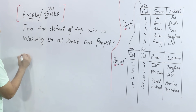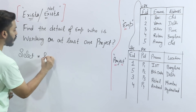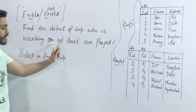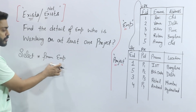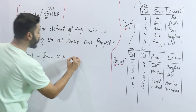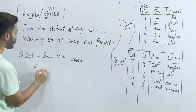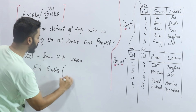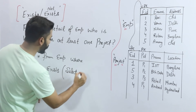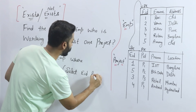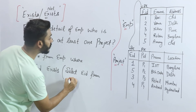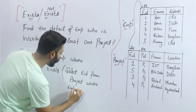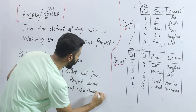Now we write the query using EXISTS. We do: SELECT * FROM employee — because the question is to find the detail of the employee who is working on at least one project. So SELECT * FROM employee WHERE EXISTS (SELECT EID FROM project WHERE employee.EID = project.EID).